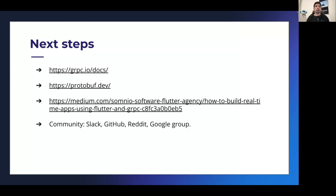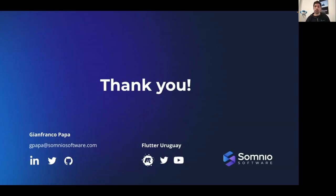For next steps, I highly recommend the gRPC documentation — it has a lot of great information. Also check the protocol buffers documentation separately. I wrote a blog post called 'How to Build Real-Time Apps Using Flutter and gRPC' covering a similar project using a list of users instead of to-dos. Ask questions in the community — Flutter groups, Reddit, GitHub, or Slack. Thanks to everyone for being here!